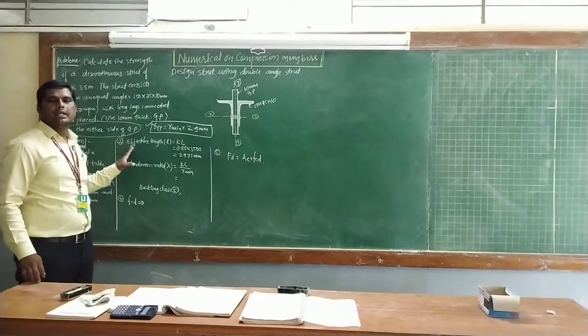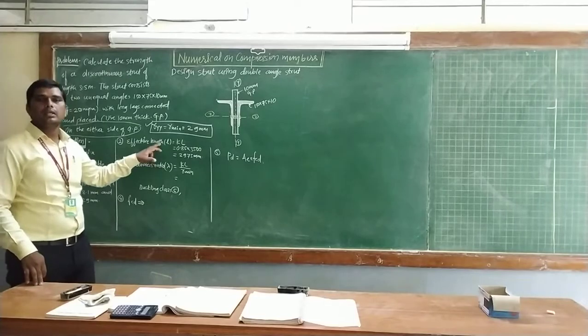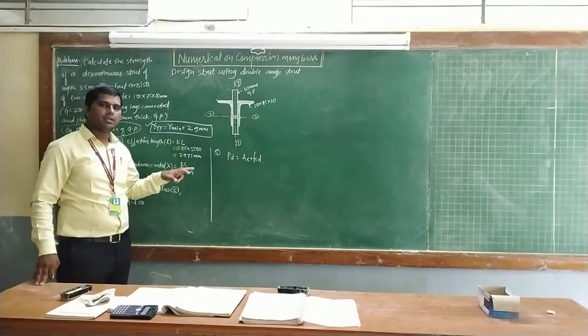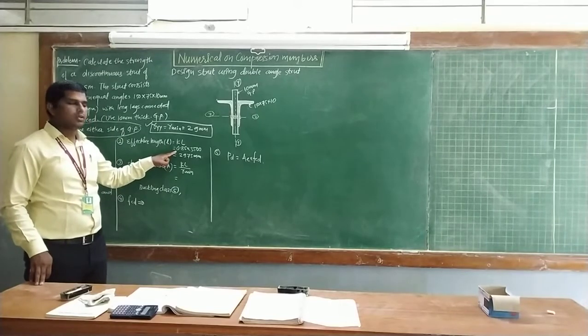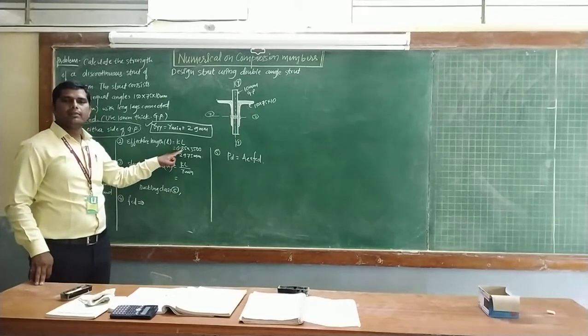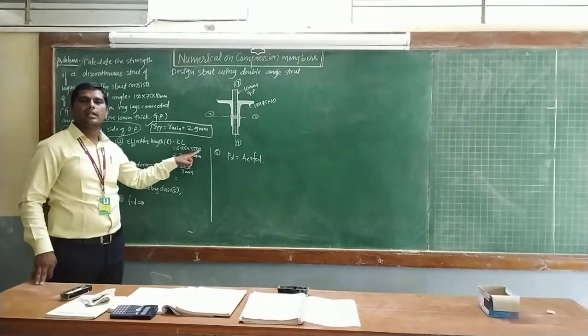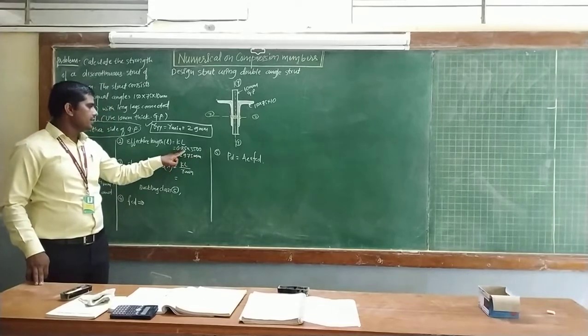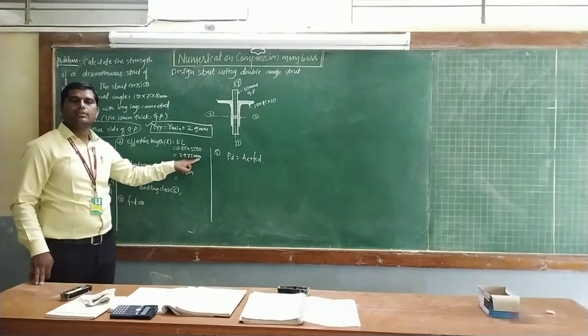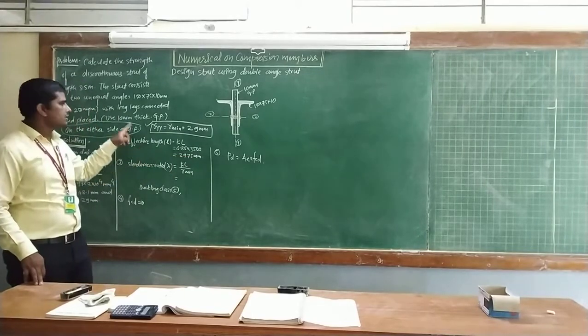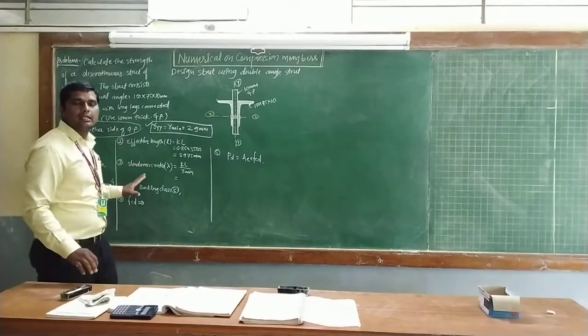The second step is to determine the effective length, that is KL. From table number 11 of page number 45, IS 800-2007, for this condition we select 0.85 times L, where L is 3.5 meters or 3500mm. So 0.85 times 3500 gives 2975mm. This is the effective length for this cross section.